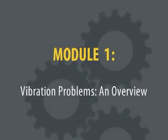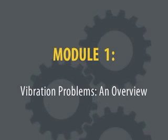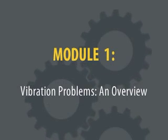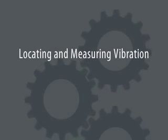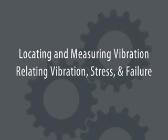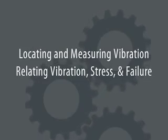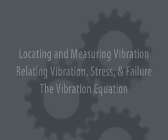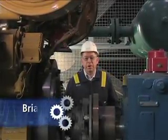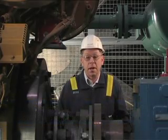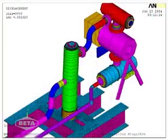This module is a short refresher on key topics on vibration relating to reciprocating compressors. These include locating and measuring vibration, relating vibration stress and failure, and the vibration equation. Vibration can occur in many different parts of a compressor package depending on the root cause. Vibration is often found in the bottles, the scrubbers, frame, piping, and foundation.